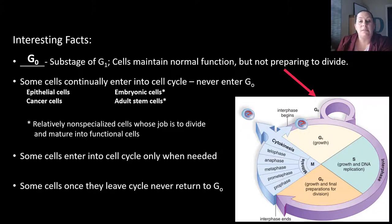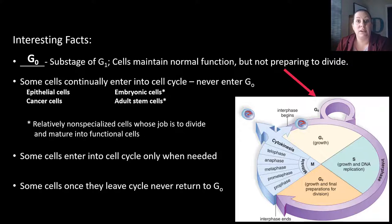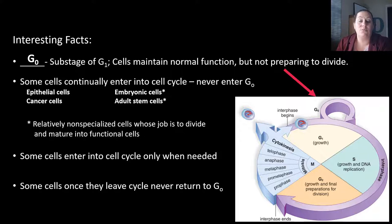Some cells will continually enter the cell cycle and never enter the G0 phase. These include epithelial cells like your skin cells — they slough off everywhere you go, and as they slough off you want them to be replaced so you continually have skin. Embryonic cells do this to create new cells to become your heart, liver, brain, and kidneys. Adult stem cells in your bone marrow are constantly doing this and dividing. And cancer cells do this — they continually divide, which is why they can cause tumors quickly.